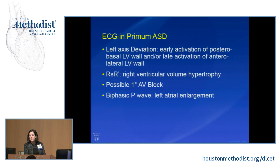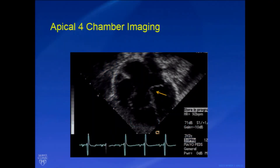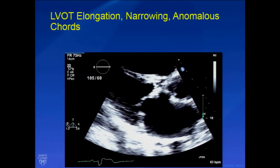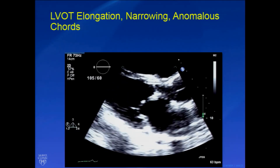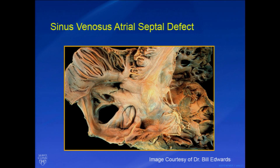The primum ASD has a different EKG pattern — left axis deviation instead of right axis deviation — because of changes in the electrical conduction system. They do tend to have RSR prime, may have AV block and left atrial enlargement. These patients also have an elongated LV outflow tract; cordal attachments from the left AV valve to the septum can cause outflow obstruction, which is different from other ASDs. Treatment is surgical only — no transcatheter options — and you must address the valve lesions, otherwise you'll be bringing these patients back to the operating room.